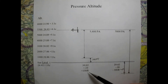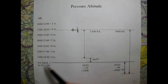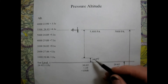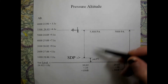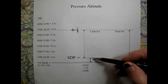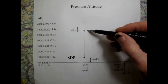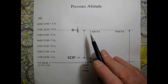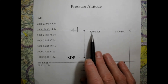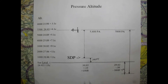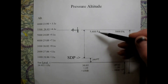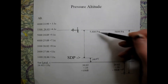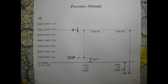Since you cannot have high pressure above low pressure, the standard datum plane moves up 100 feet. To get our pressure altitude, we measure from the standard datum plane to our true altitude. With the SDP now at 100 feet above sea level, our measurement from there to our true altitude of 5,500 feet gives us a pressure altitude of 5,400 feet.